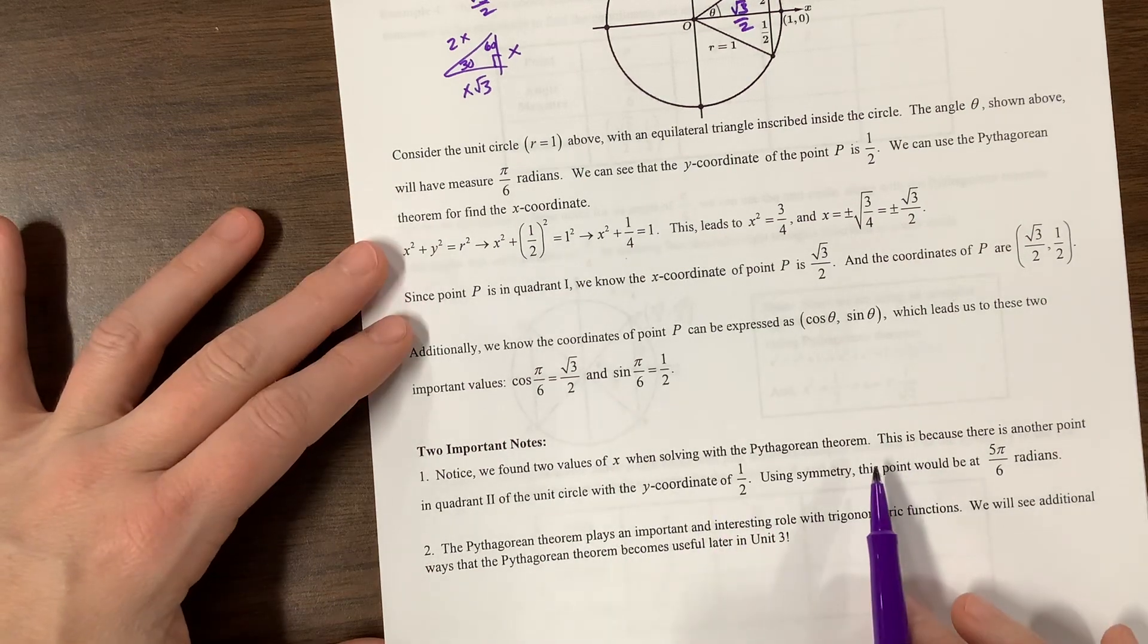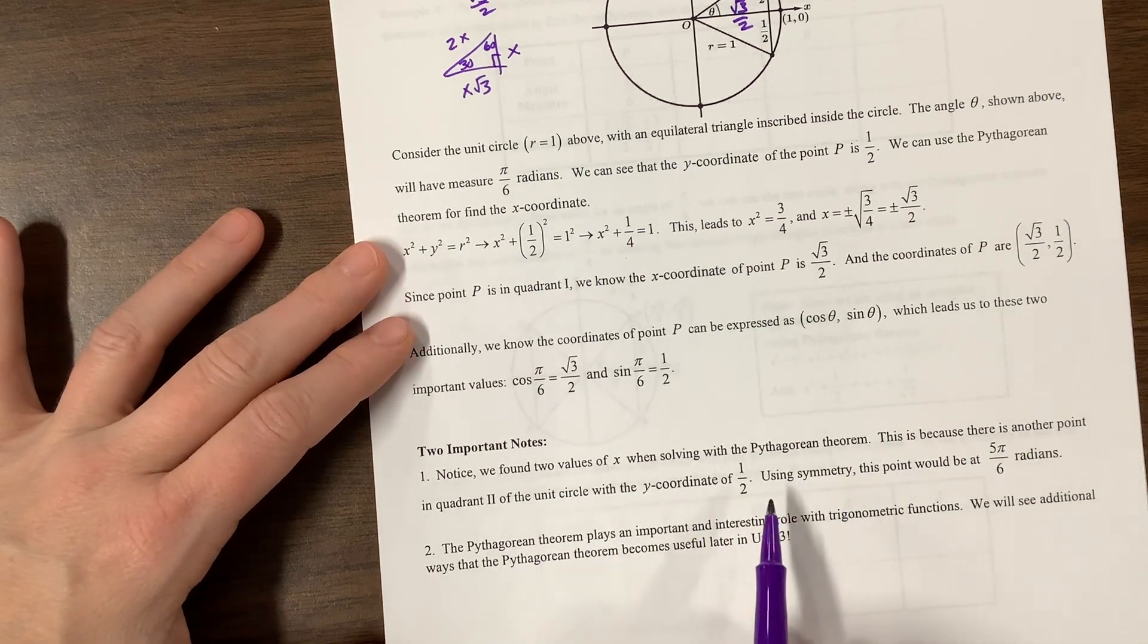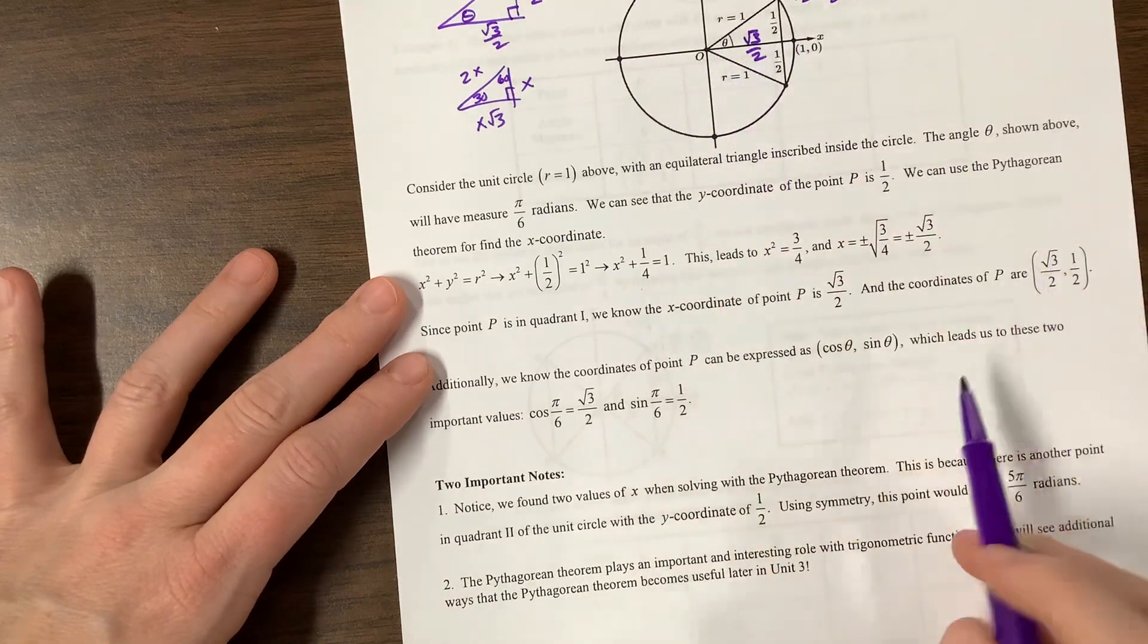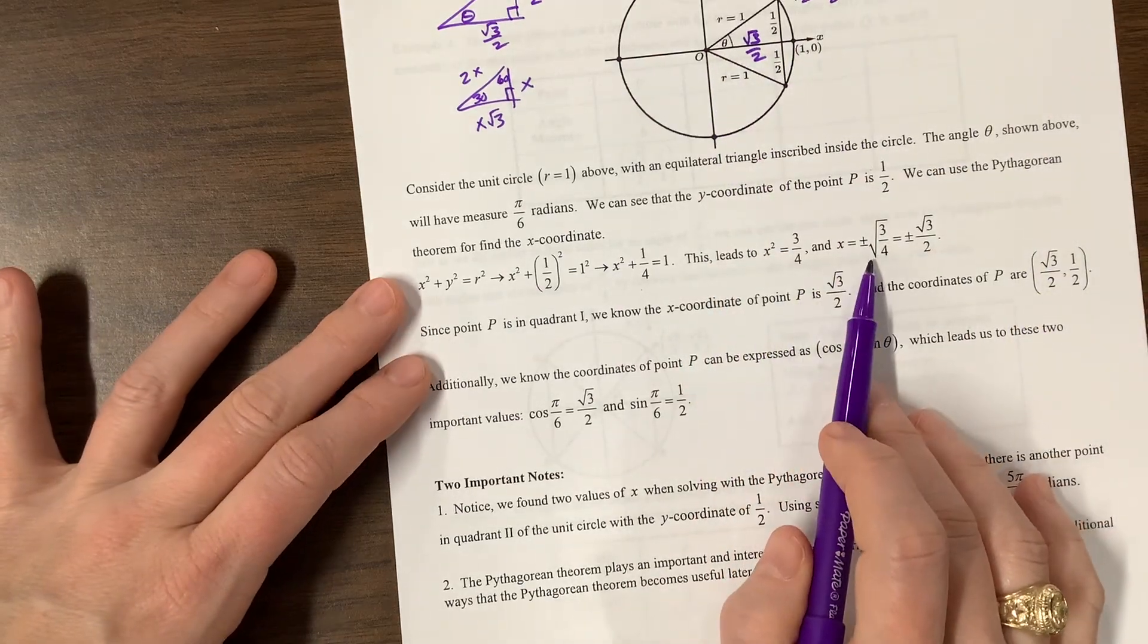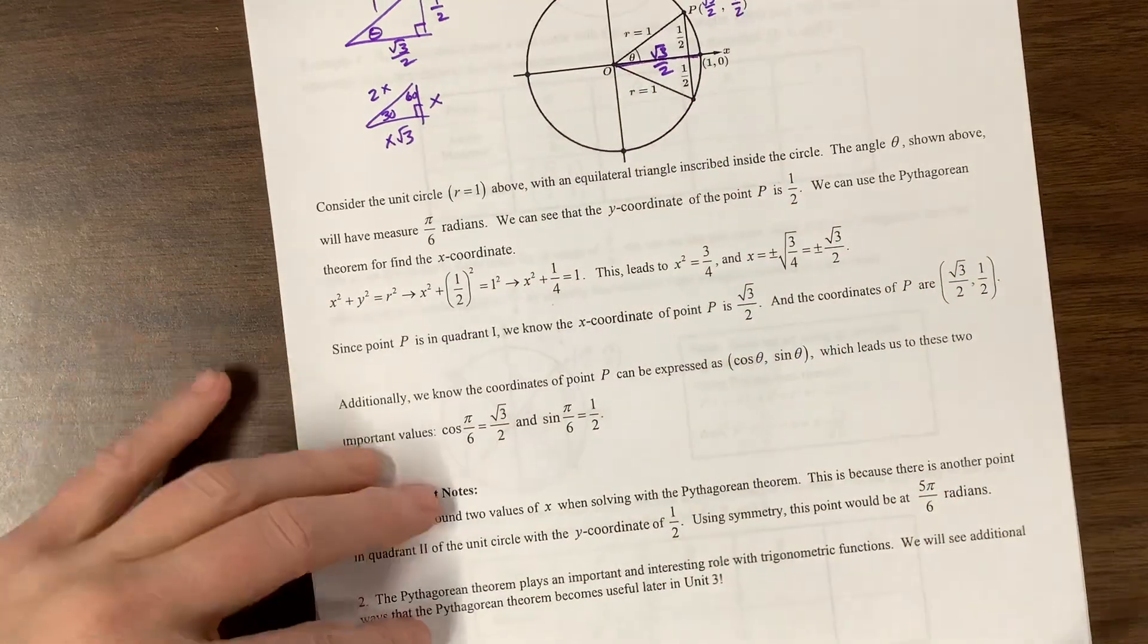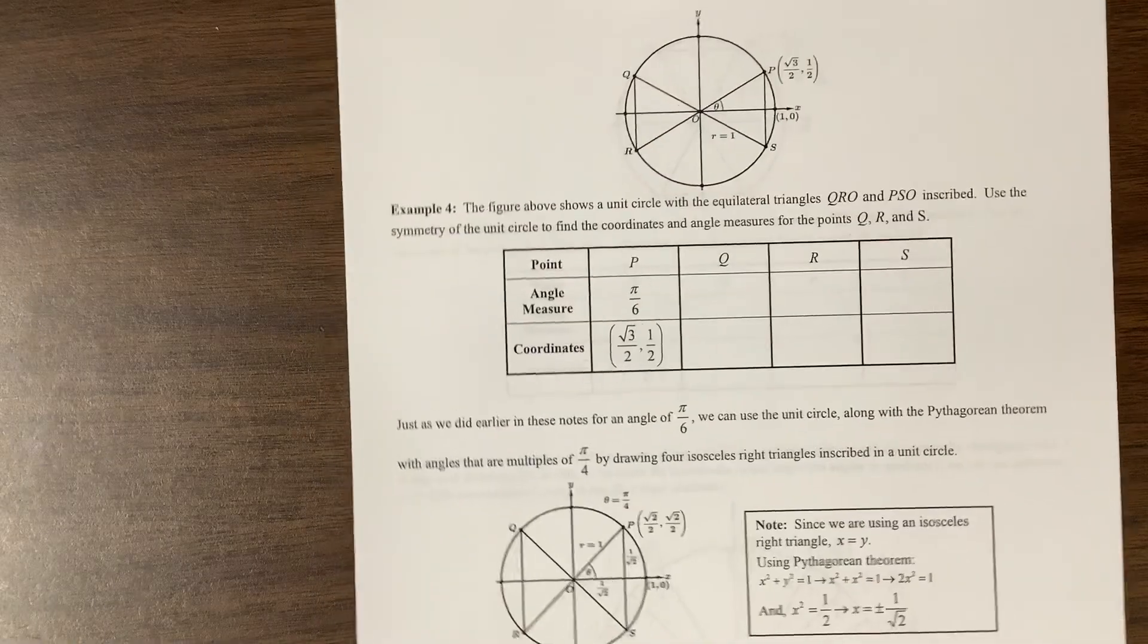Let's see, we found two values of x in solving. So his point is, we found that it was plus or minus. Where did he come back here? He said it was plus or minus root 3 over 2. Well, here's the plus, and the minus goes this way.